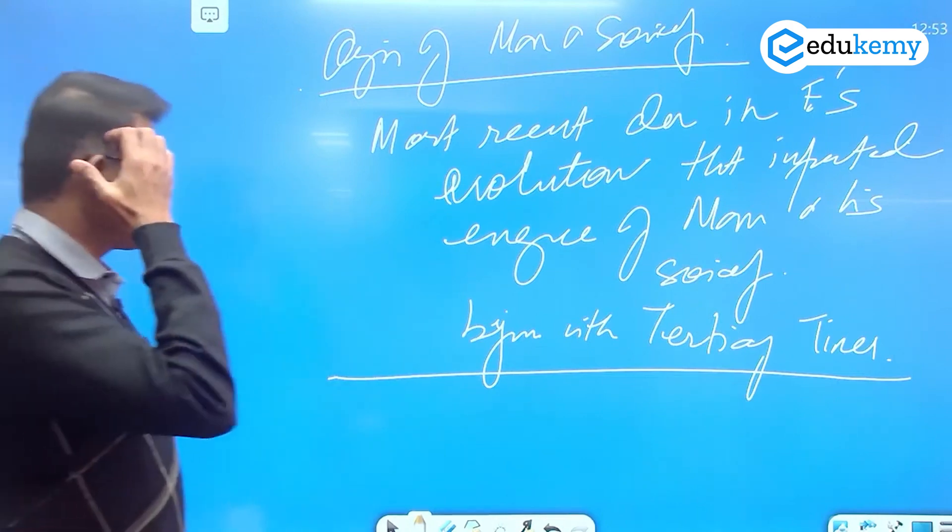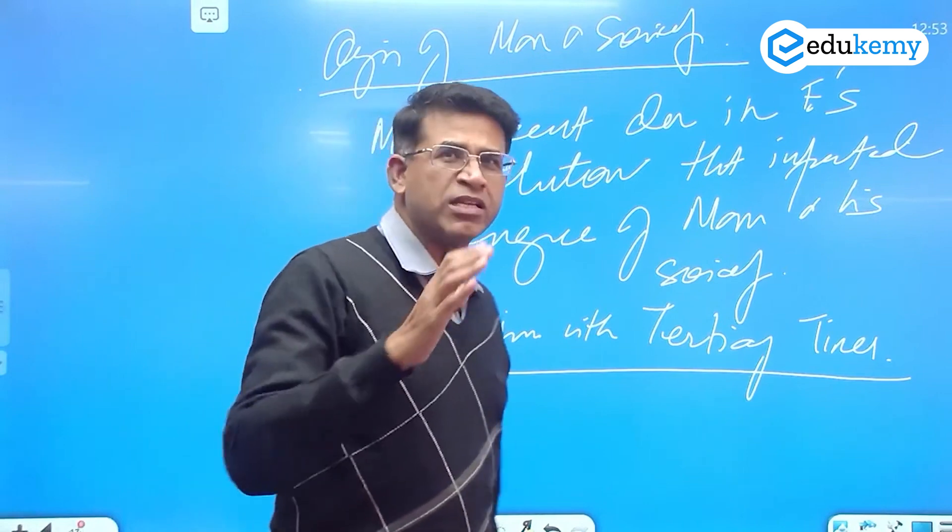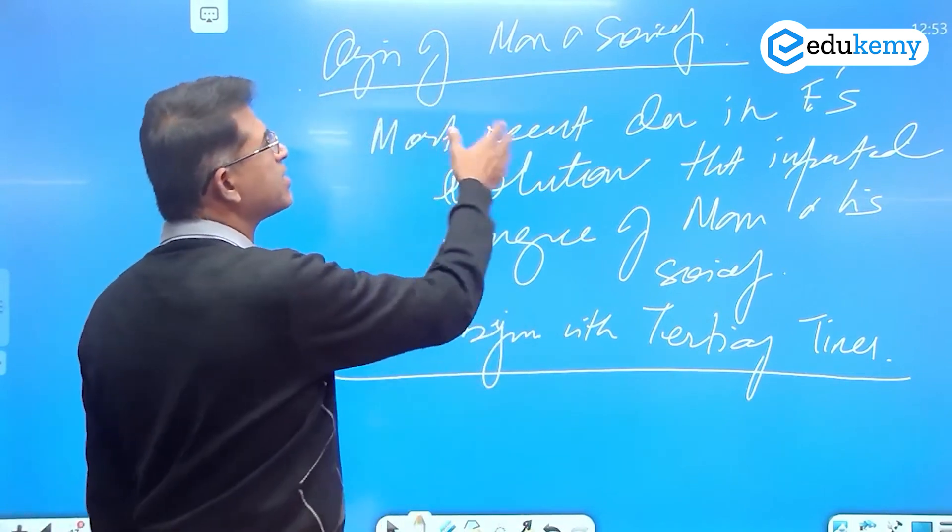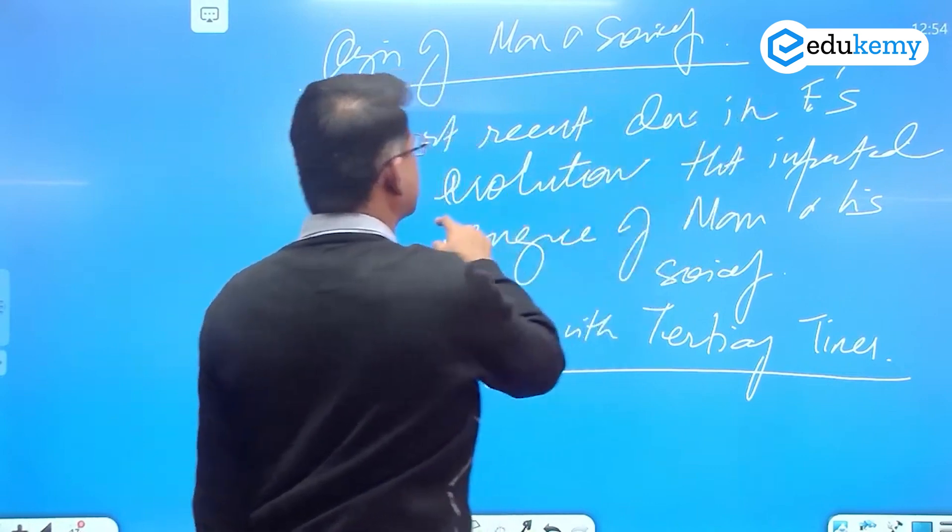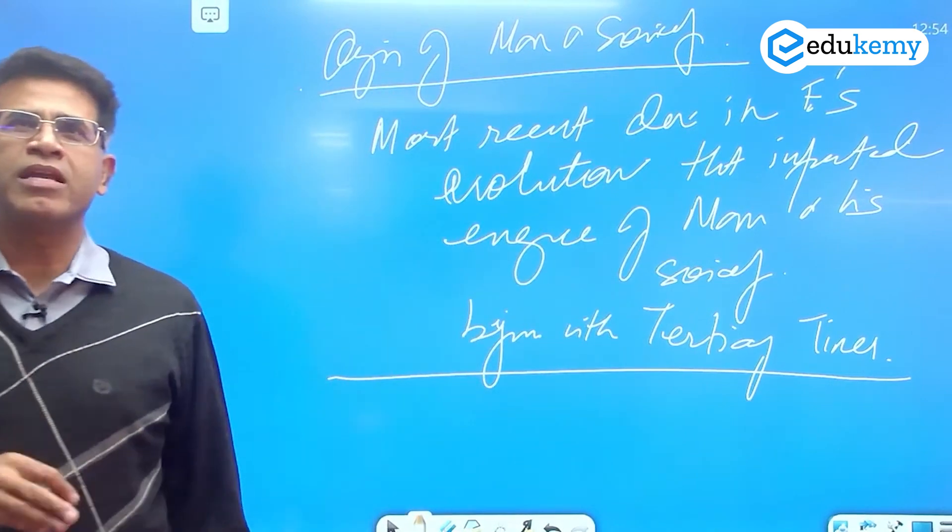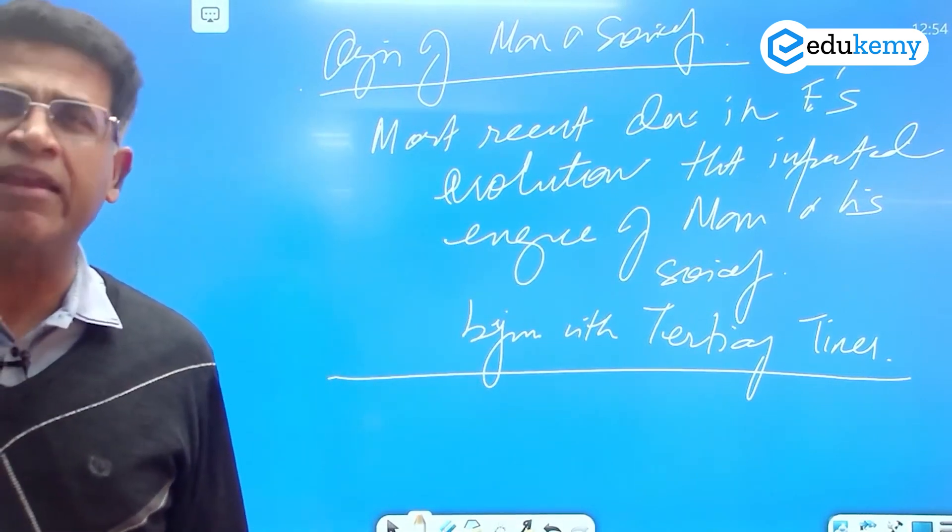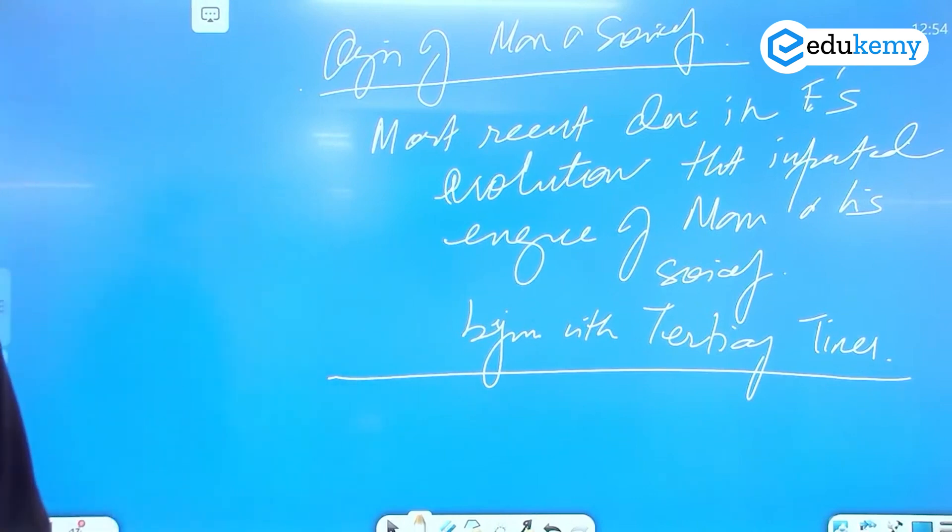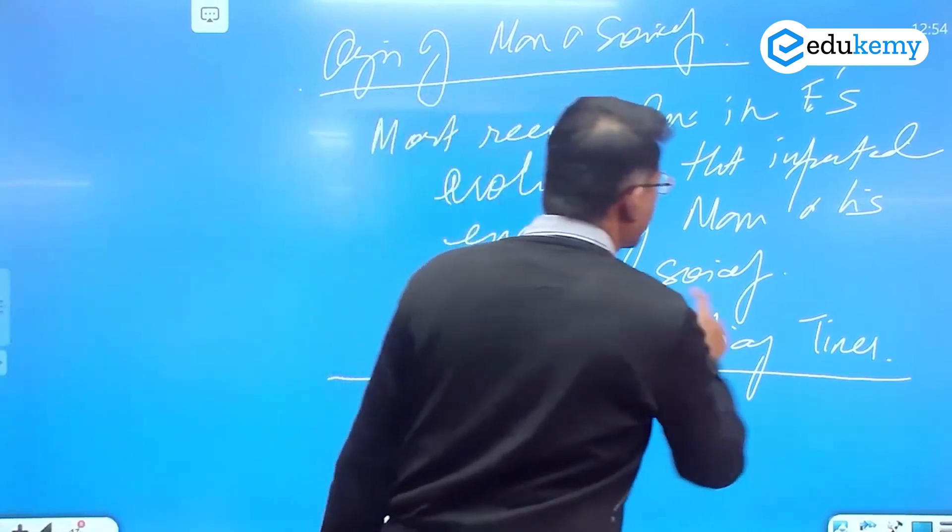But I say, if you are talking about the most recent events, the most recent developments in the earth's evolution that impacted the emergence of man and his society, we say begins with the tertiary times. Why?